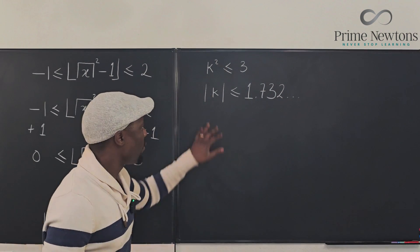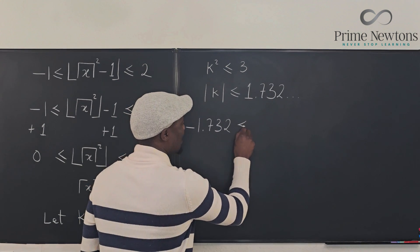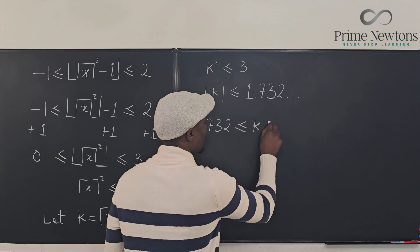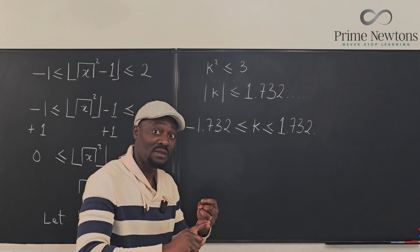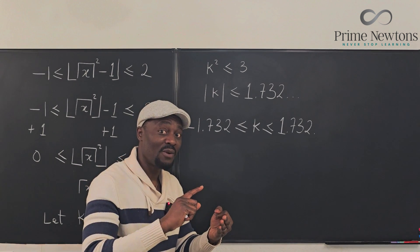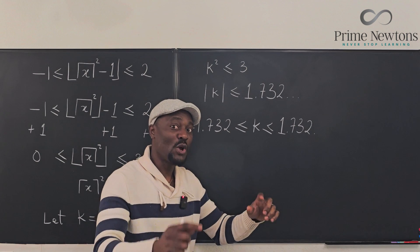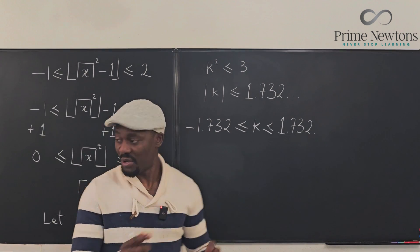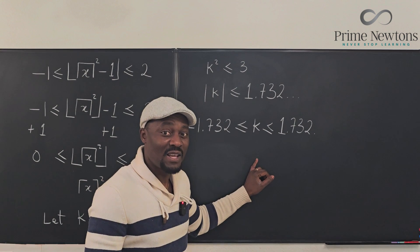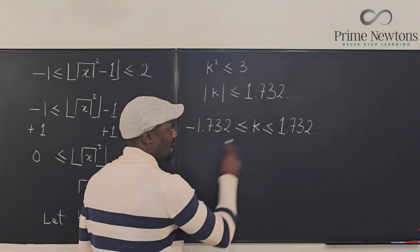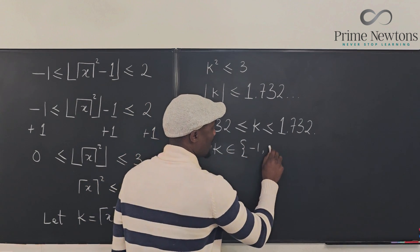We can rewrite this as minus 1.732 is less than or equal to k is less than or equal to 1.732. Since k must be an integer, the possible values are k equals minus one, zero, or one. The smallest k is minus one and the largest is one. Therefore k must be in the set {-1, 0, 1}, or equivalently, minus one is less than or equal to k is less than or equal to one, where k is an integer.